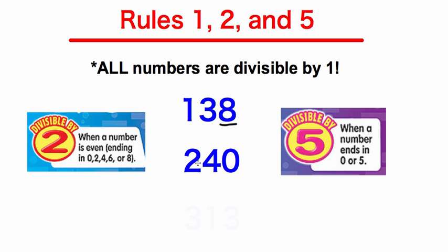The next number we're looking at is 240. Looking at the two different rules: 240 is divisible by 2 because it ends in a 0.